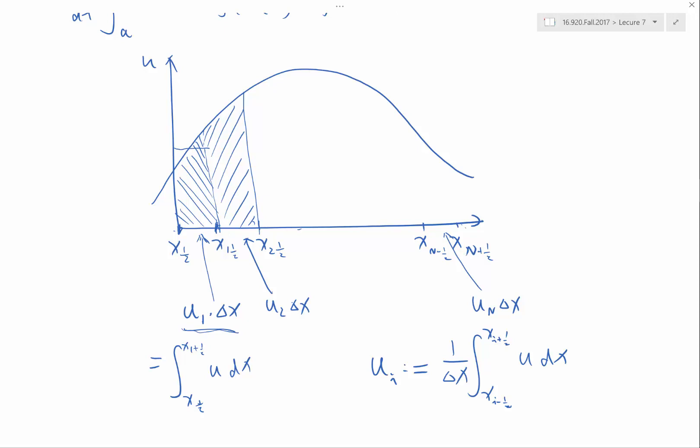Unlike finite difference, where if you have grids of different size, it's very tedious because for every different spacing, you have to redo the Taylor series analysis and re-derive what should be the weights of my finite difference operator. In finite volume, I just need to know the size of the interval i and define my ui to be 1 over that delta xi times the integral.